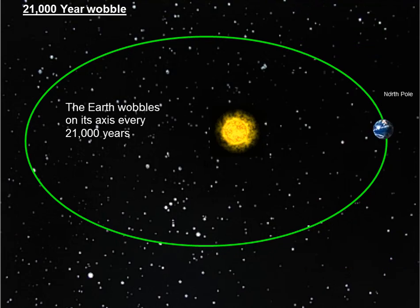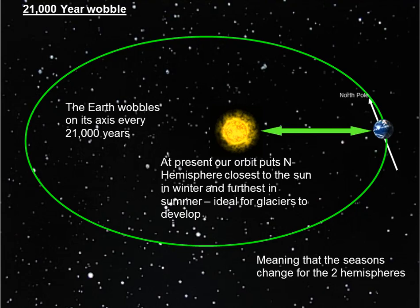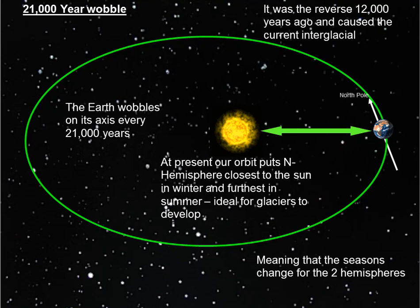The third is the 21,000-year wobble. The Earth wobbles on its axis every 21,000 years, which basically means the seasons would shift. That has big consequences, particularly if the Earth's orbit is elliptical, because it can cause big changes in the amount of insolation the Earth receives. At present, the orbit puts the Northern Hemisphere closest to the Sun in winter and furthest in summer — ideal for glaciers to develop. It was the reverse 12,000 years ago that caused the current interglacial.